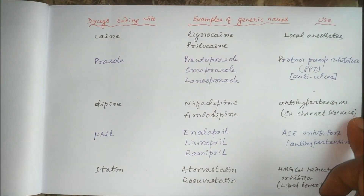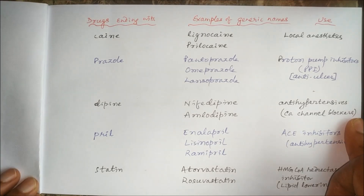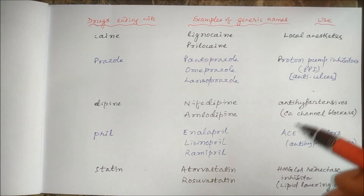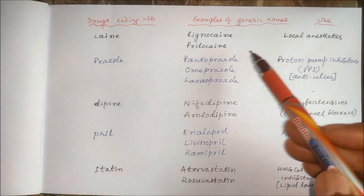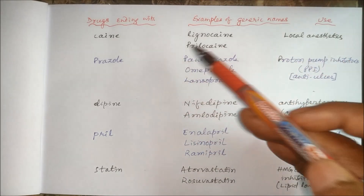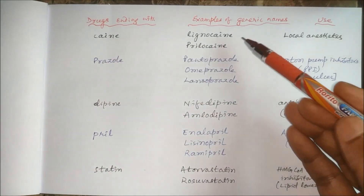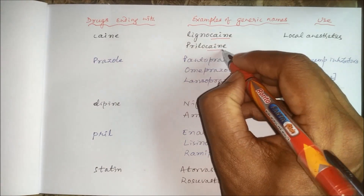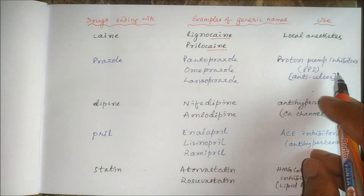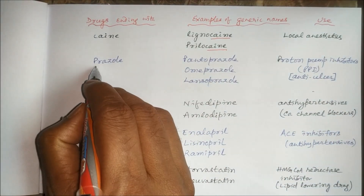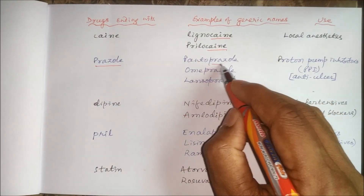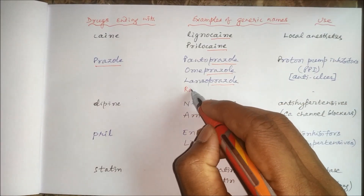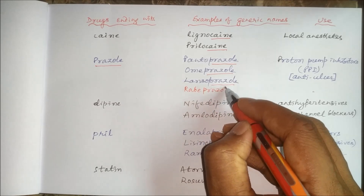Let us take a few examples of how generic names are given for a group of drugs from the same family. Local anesthetics usually end with '-caine' — for example, lignocaine, prilocaine. Similarly, anti-ulcer drugs — proton pump inhibitors — end with '-prazole': pantoprazole, omeprazole, lansoprazole, rabeprazole.